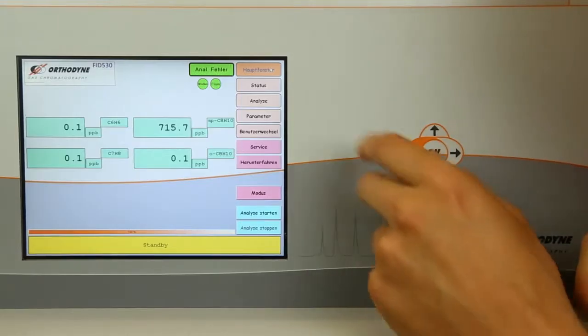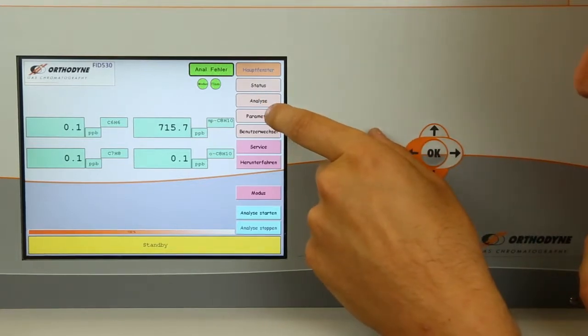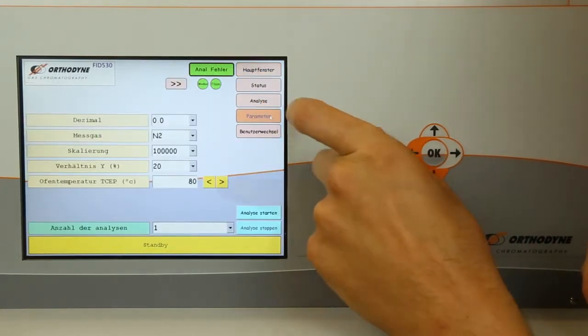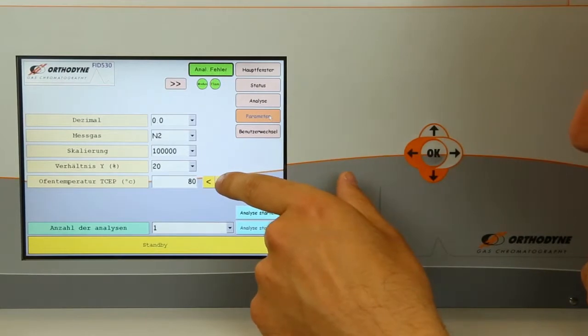Go to parameters and increase the temperature of the column. Leave the column at the regeneration temperature for 16 hours.